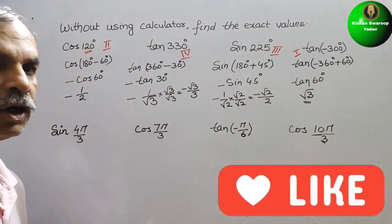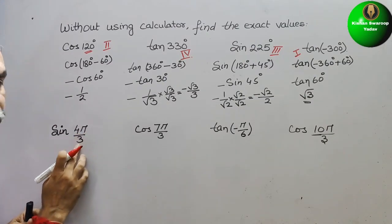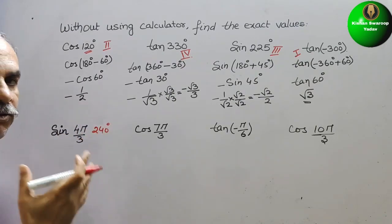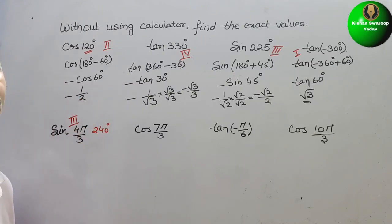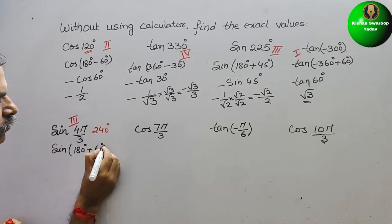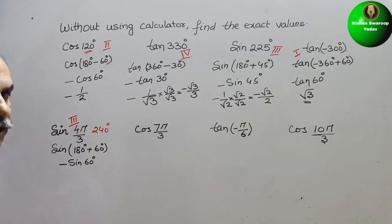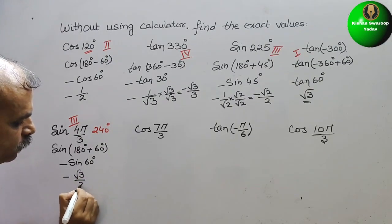Next is sin(4π/3). We know π = 180°, so 180/3 = 60, and 60 × 4 = 240°. 240° lies in the third quadrant. In the third quadrant, sine is negative. So we write sin(180° + 60°), which gives minus sin 60°. Sin 60° = √3/2, so the answer is minus √3/2.